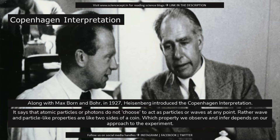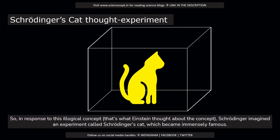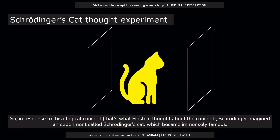The Copenhagen interpretation says that atomic particles or photons do not choose to act as particles or waves at any point. Rather, wave and particle-like properties are like two sides of a coin. Which property we observe and infer depends on our approach to the experiment. In response to this illogical concept — that's what Einstein thought about it — Schrödinger imagined an experiment called Schrödinger's Cat.